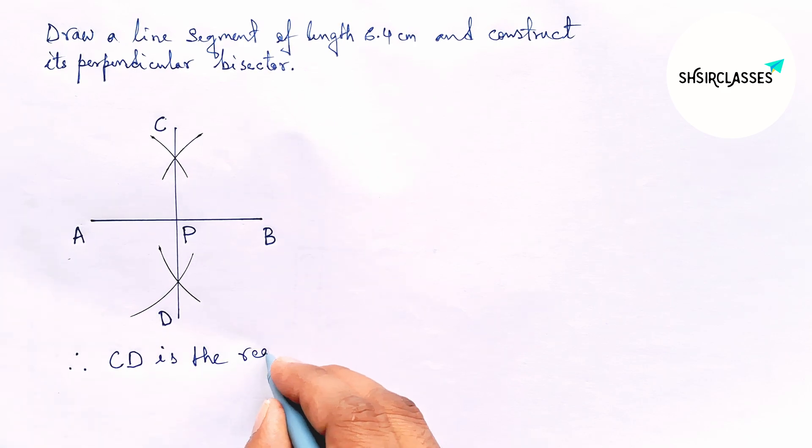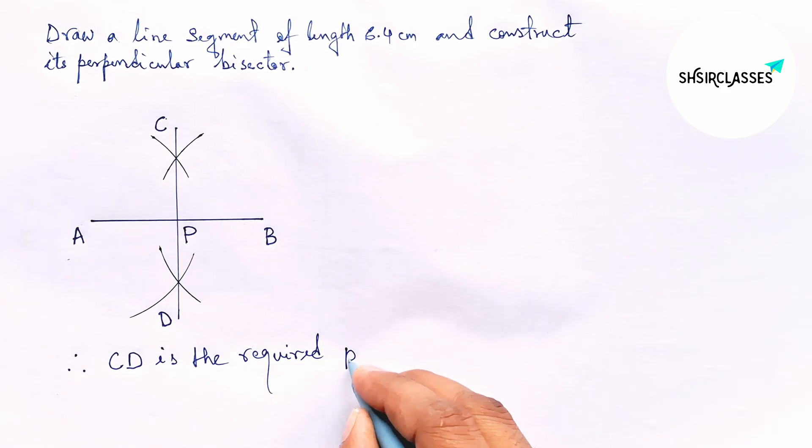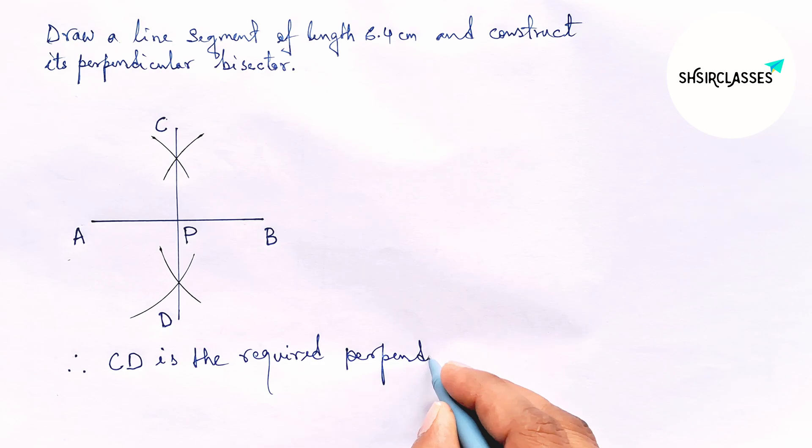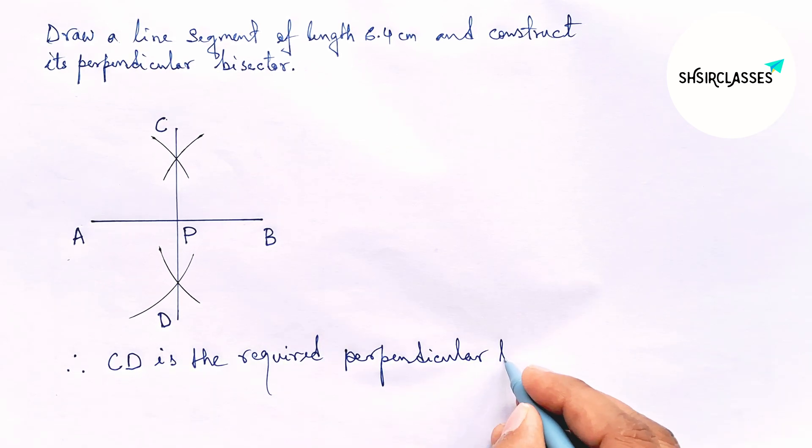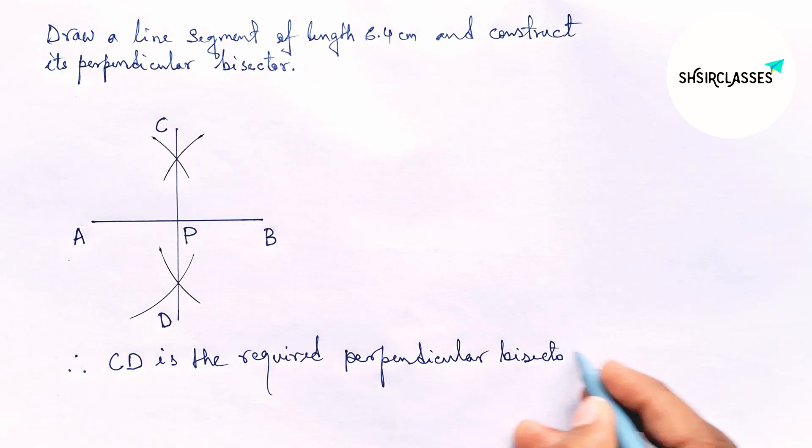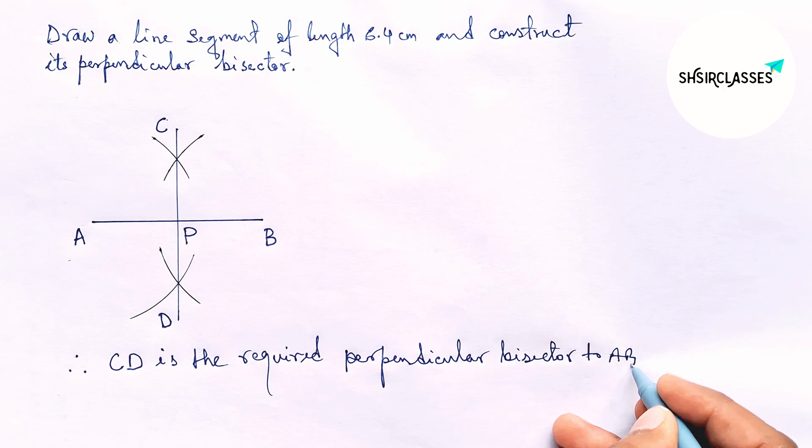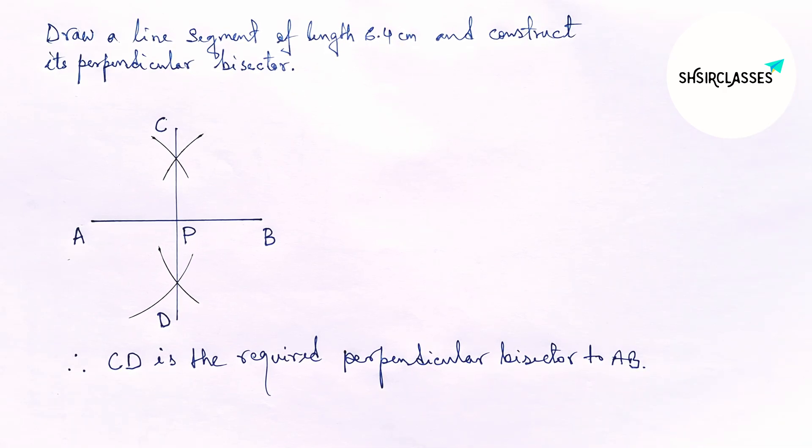To the given line AB of length 6.4 centimeter. And by this way you can construct perpendicular bisector to any given line in easy way. So that's all, thanks for watching, please share it.